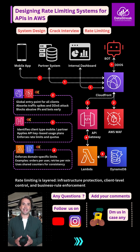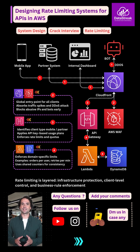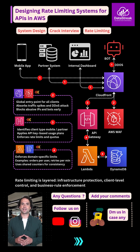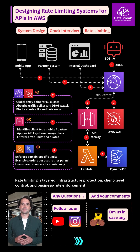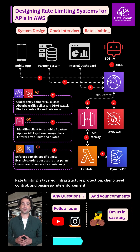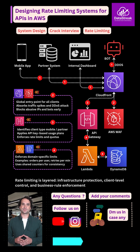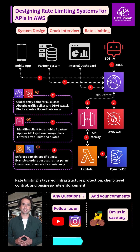These limits are tracked using Amazon DynamoDB or Redis. That's layered rate limiting on AWS — blocking abuse early, controlling API usage, and protecting business logic.